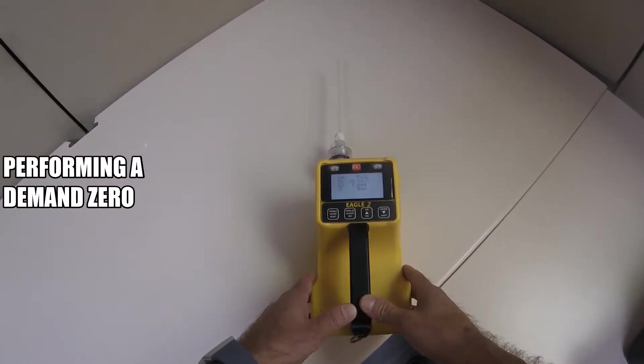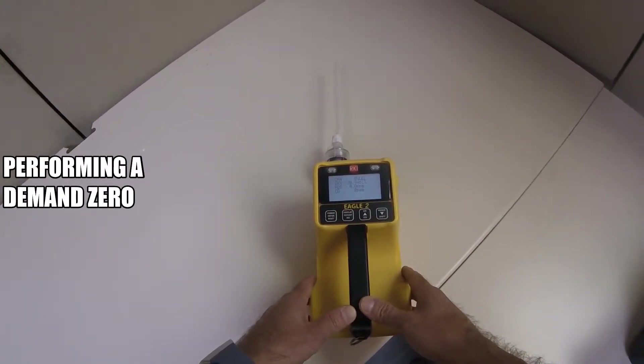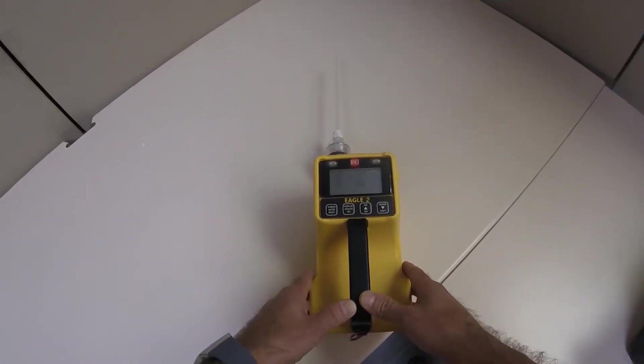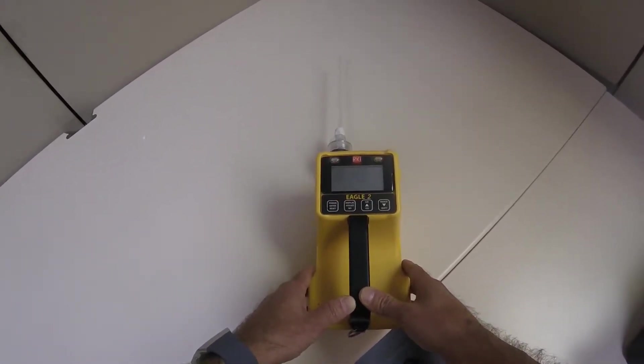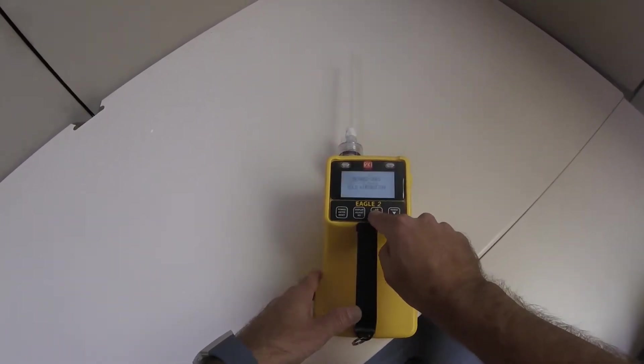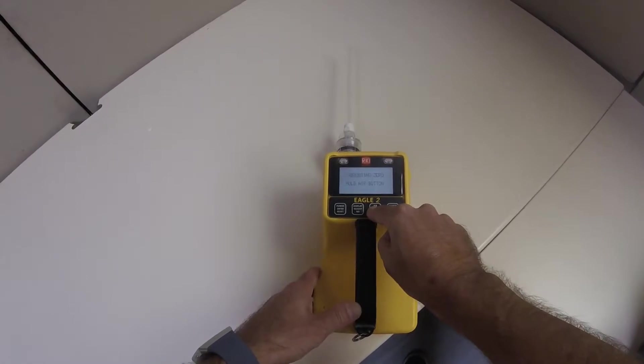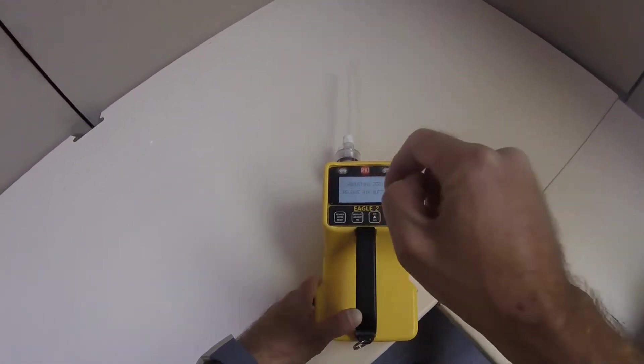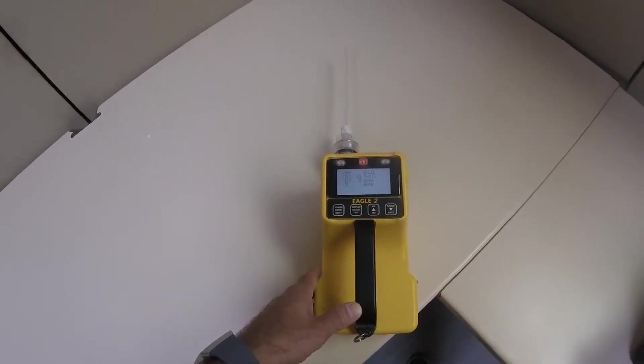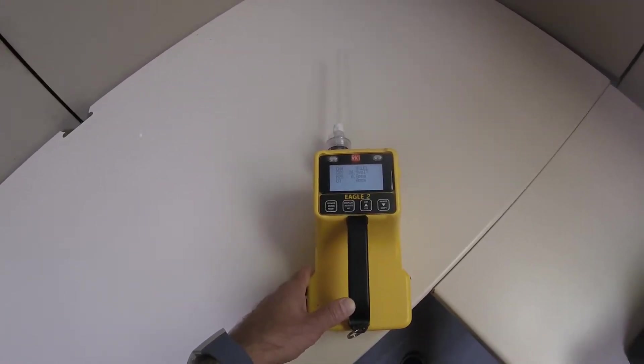The first step to a demand zero is to find a fresh air environment that is free of toxic or combustible gases and a normal amount of oxygen, which is 20.9% in ambient air. Press and hold the air yes button. The LCD will prompt you to keep hold of the air yes button and the buzzer will pulse. Release the button when you are prompted to do so. The Eagle II will now display fresh air values.